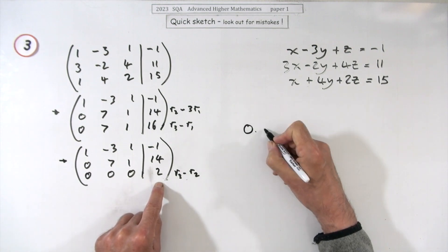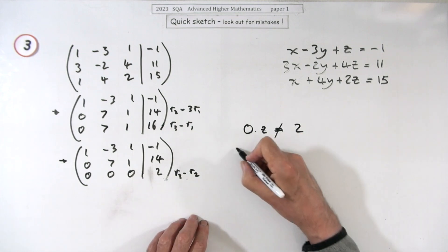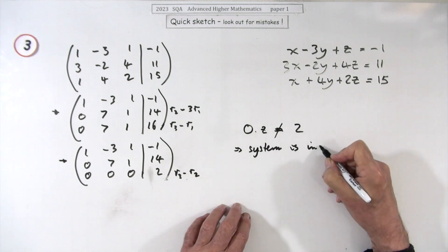I'll make the statement here: zero times z cannot equal two, which means that the system is inconsistent.